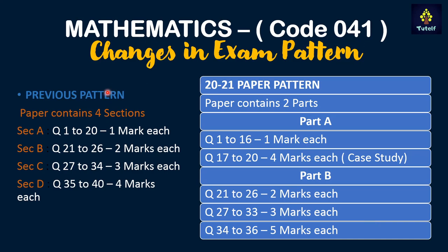Earlier the Mathematics paper used to have four sections: Section A, B, C, and D. In Section A there were questions 1 to 20 of one mark each, questions 21 to 26 for two marks each, questions 27 to 34 for three marks each, and Section D had questions 35 to 40 for four marks each.